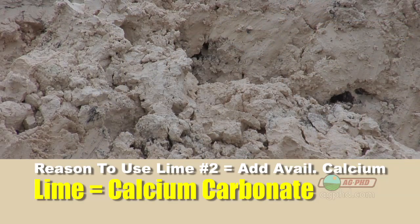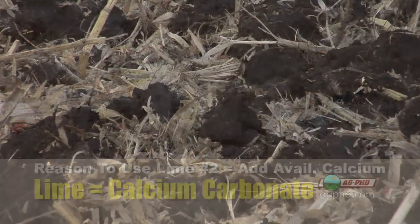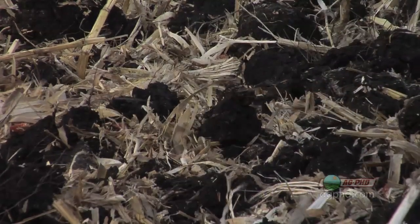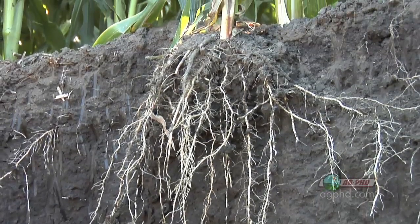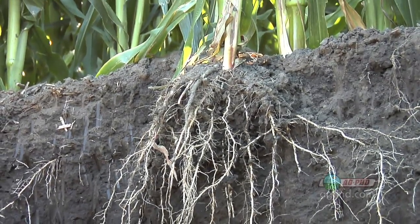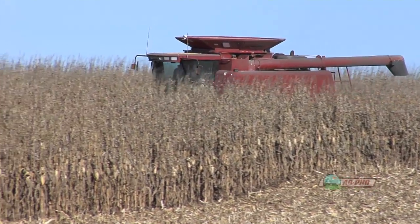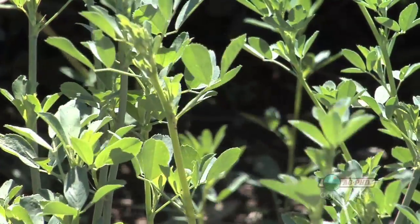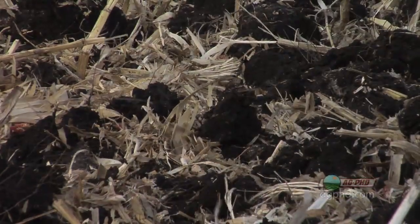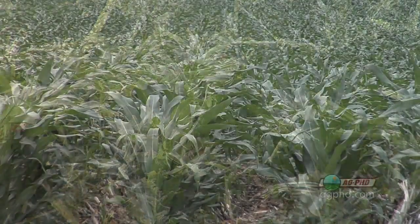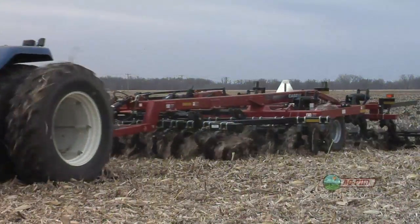Lime is calcium carbonate, so you're adding a lot more calcium to the equation. When you're talking about a pH of 5.5 versus wanting to be up at 6.5, it doesn't sound like that's a whole lot of difference — but in many cases, it's 25% off a corn or soybean yield, and it's even more than that off an alfalfa yield and quite a bit off a wheat yield. Everything else may be exactly the same: the amount of nutrients in the soil, the variety, the tillage — but if you've got a 6.5 pH versus a 5.5 pH, you will have a lower yield where you have that lower pH.